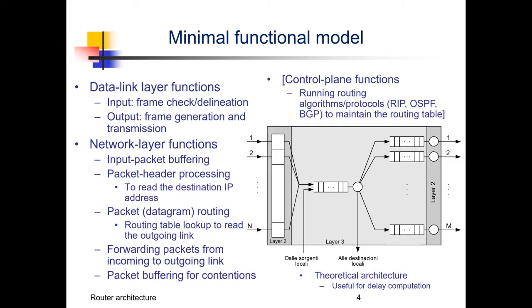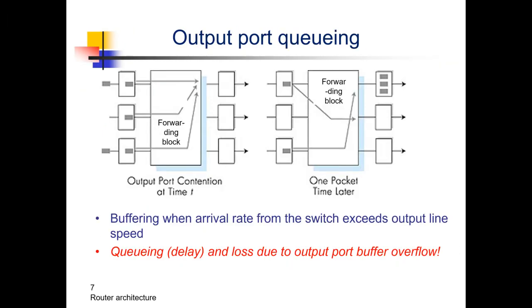In the simplified model, buffers for output port contention are located at the output, close to the output interface. This is just one of the possible buffer configurations, depicted in this slide. When you have buffers at the output you can manage contentions. For example, here three packets all have to be sent to the first outlet on top. Using buffers, one is transmitted while the other two are stored in the buffer. In the next time slot another packet arrives at the port and is inserted in the buffer, waiting for the others to be transmitted.